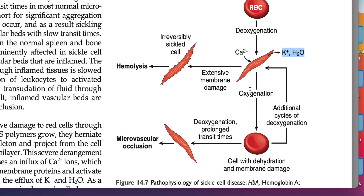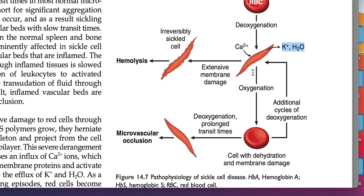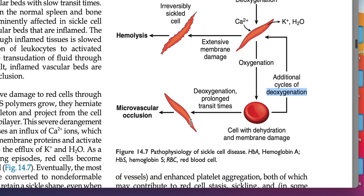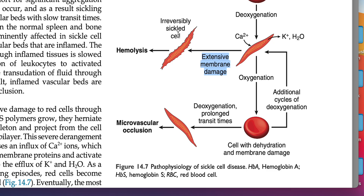Now, if oxygen comes in, the solubility increases — when well oxygenated, HbS becomes very soluble and the cell returns to completely normal. More deoxygenation, and the same thing happens again. This is called a reversibly sickled RBC. The main concern with reversibly sickled RBCs is that they become sticky and cause microvascular occlusion, leading to vaso-occlusive crises: dactylitis, autosplenectomy, priapism, and more. When this damage-oxygenation-deoxygenation cycle keeps repeating, it causes extensive membrane damage and the cell becomes irreversibly sickled — beyond the point of recovery — and that's what causes hemolysis.